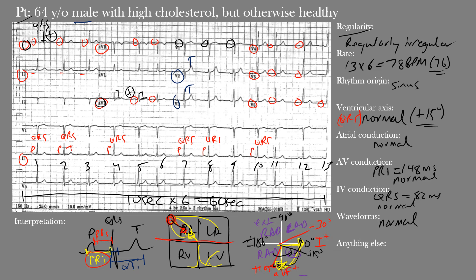Is there anything else we're missing? The R wave progression in the precordial leads appears normal. R wave progression means that as we go across the precordial leads from V1 to V6 — from right to left — the R wave should increase in amplitude, because we're moving toward the dominant left ventricle. The R wave is the first positive deflection after the P wave. Notice how the R wave increases from V1 up to V5, which is what we call normal R wave progression, and we see that here.